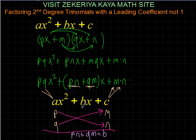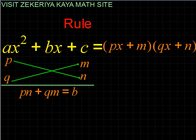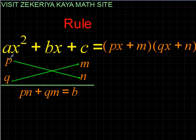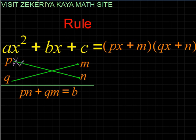So if we write it as a rule: for AX² + BX + C, find two numbers whose product makes C, and two numbers whose product makes A. Then arrange these numbers so that when you multiply them crosswise — P times N plus Q times M — the result equals B. Once you find such numbers, you can factorize the expression as (PX + M)(QX + N).